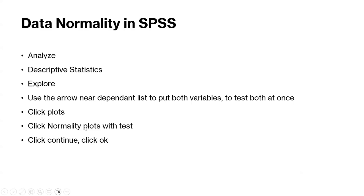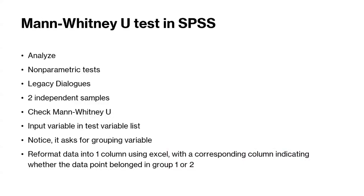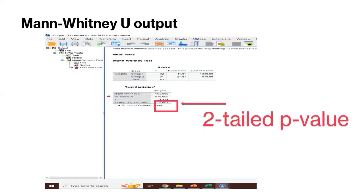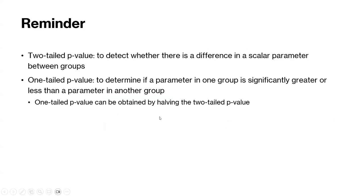With that being said, I'm going to continue with my slideshow. Here's a summary of the steps for testing data normality: Analyze, Descriptive Statistics, Explore. You click on Plots and check both variables at the same time. Both variables need a Shapiro-Wilk's test p-value greater than 0.05 in order to use parametric tests; otherwise use the non-parametric test. Remember: two-tailed p-value to detect whether there's a difference; one-tailed p-value to determine if a parameter in one group is significantly greater than the other.